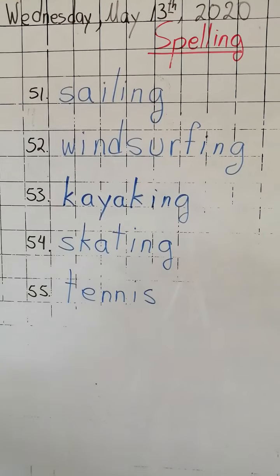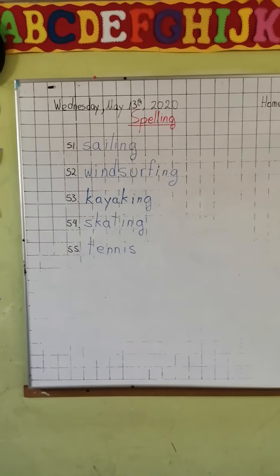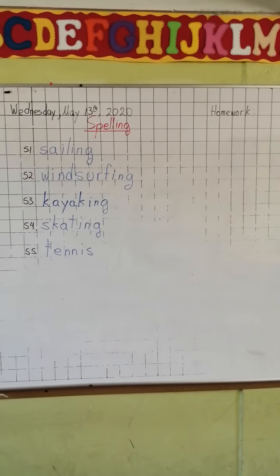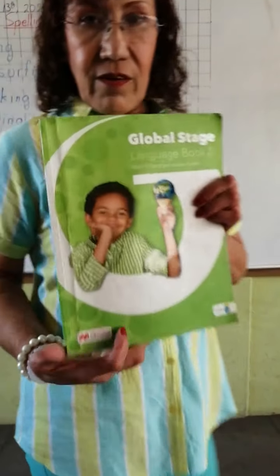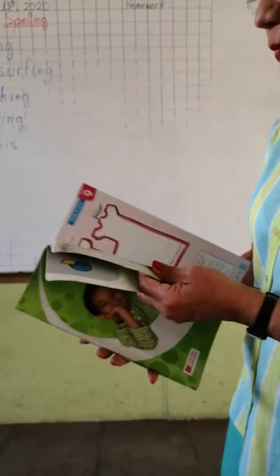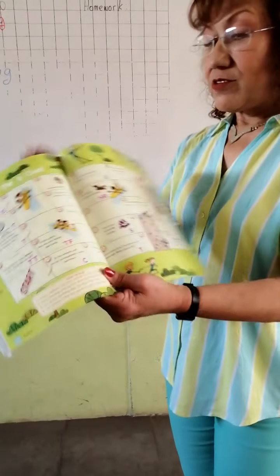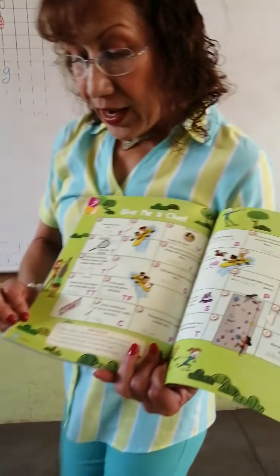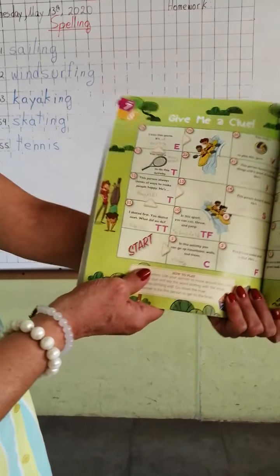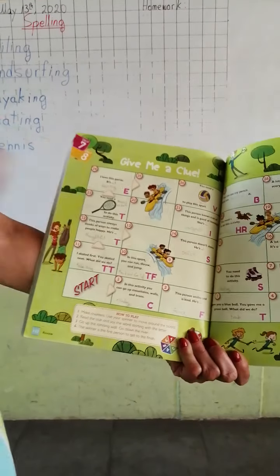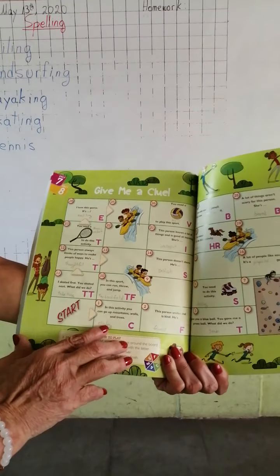Very good, kids. Now we are going to continue with an activity in your student book. Take out your language book and open it to the game on pages 112 and 130. It says 'Give me a clue.' It's a review of unit 7 and unit 8. We are going to do it together.